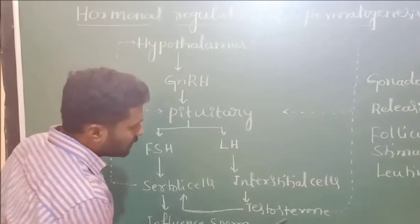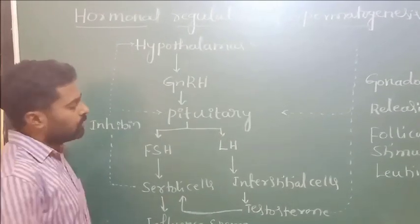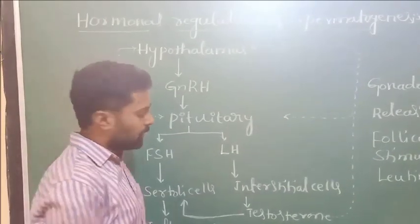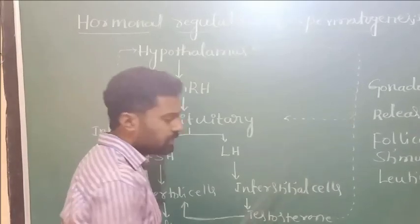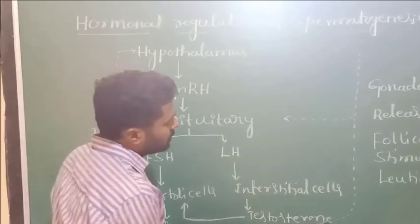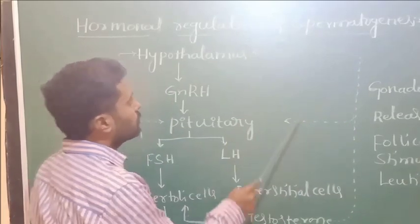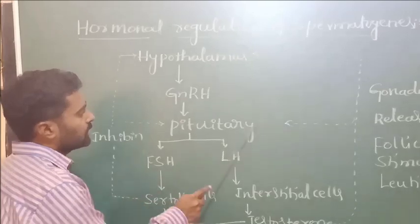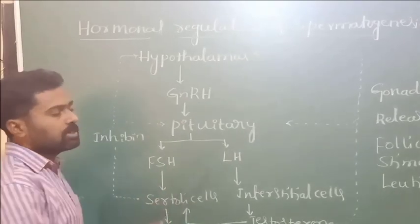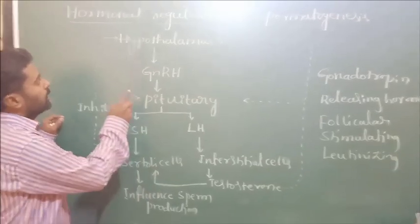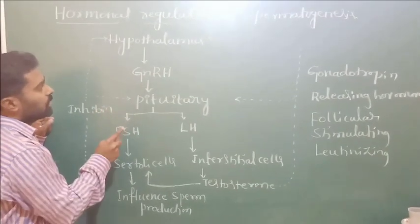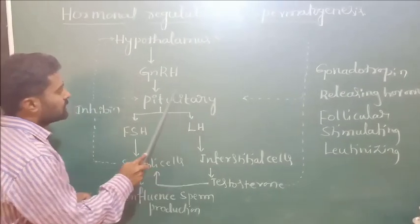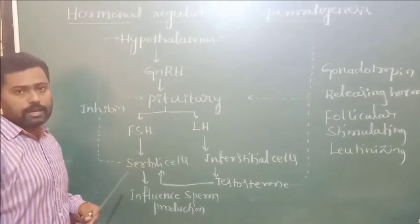Similarly, when the level of testosterone increases, this sends a negative feedback. When the level of testosterone rises in the blood, it again stops the synthesis of GnRH, and in turn the anterior pituitary gland will stop the release of luteinizing hormone.